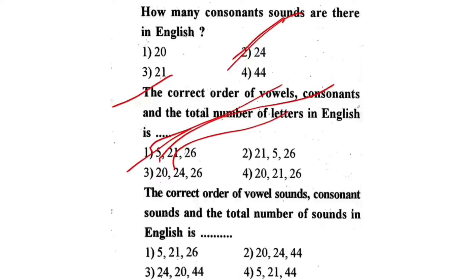Next question: The correct order of vowel sounds, consonant sounds, and the total number of sounds in English. First one, 5-21-26. Second one, 20-24-44. Third one, 24-20-44. Fourth one, 5-21-44. The correct answer is second one — 20 vowel sounds, 24 consonant sounds, 44 total sounds.